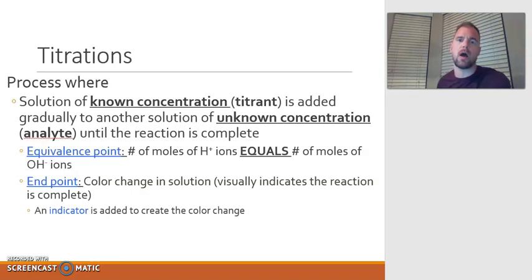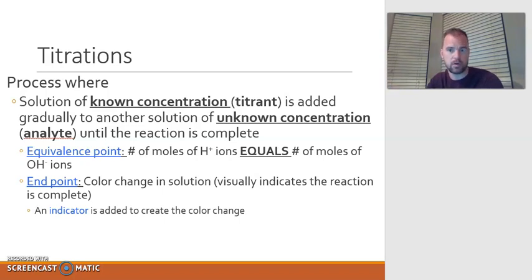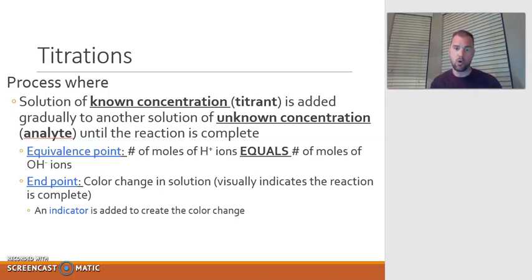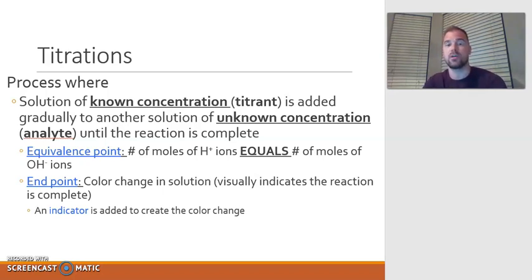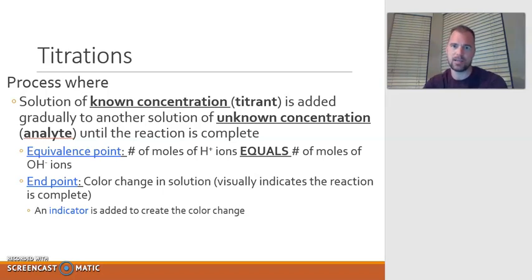So let's talk about what a titration is. A titration is a process where you have a solution that you know the concentration for, and you're adding it gradually to another solution where you typically don't know the concentration for. So there's a known and then there's an unknown. The known concentration has a special name — we call that the titrant. The solution that we do not know the concentration for, the unknown that we're solving for, that's going to be called the analyte because we're analyzing it. Essentially, you are taking two substances and reacting them together, and that is what a titration is.